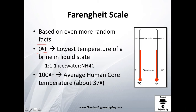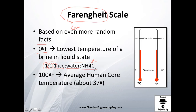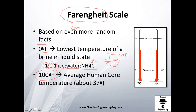Zero Fahrenheit was defined as the lowest temperature of a brine in liquid state. Fahrenheit was actually German — not American or British. He mixed equal parts by mass: one kilogram of ice, one kilogram of water, and one kilogram of ammonium chloride. Whatever temperature that mixture reached, he called it zero Fahrenheit, which corresponds to roughly minus 17-18 degrees Celsius.